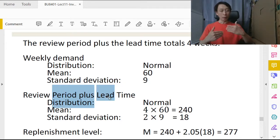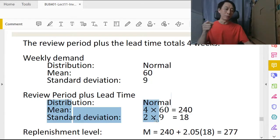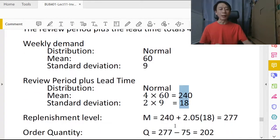So to go from one week to four weeks, we need to add up the distributions. Normal plus normal four times, still normal. Mean will be four times the weekly mean. Variance will be four times the weekly variance, which is nine squared, so standard deviation will be square root of four, which is two, times the standard deviation for one week.